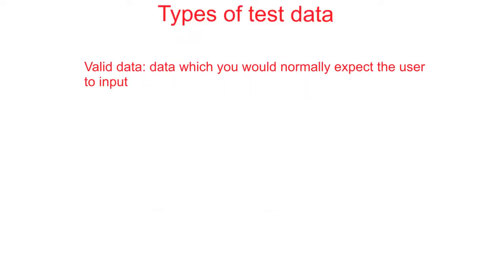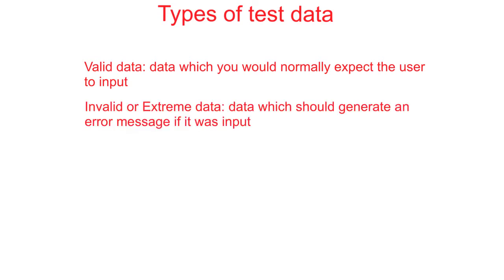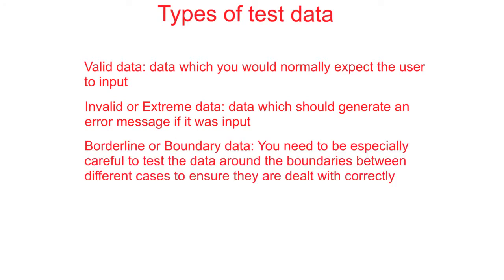Types of input data to consider when you are testing would be valid data — this is any data that you would normally expect the user to input. Invalid or extreme data would be any data which you would expect to generate an error message if it was input. Borderline or boundary data is also important; you must pay extra attention to testing data at the boundaries between different cases to ensure they are dealt with correctly.